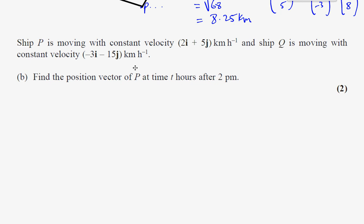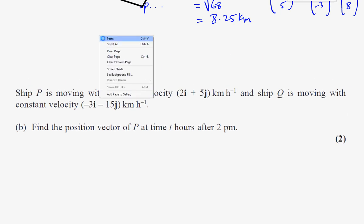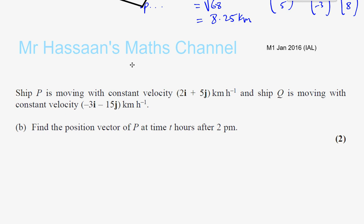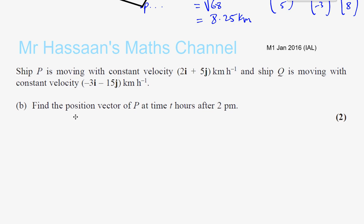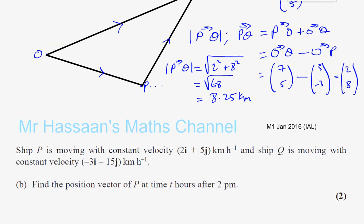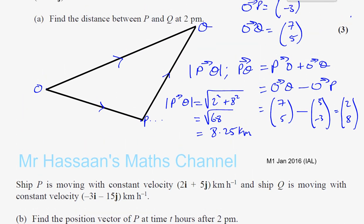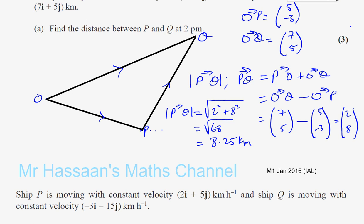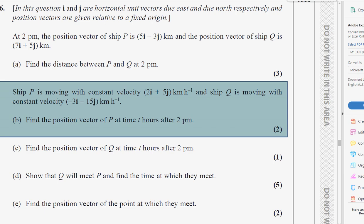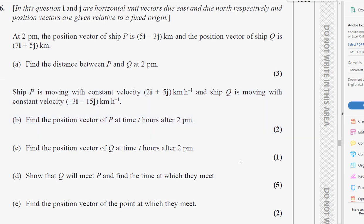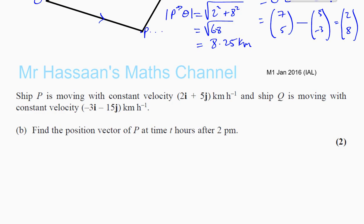Now, part B tells us that ship P is moving with constant velocity 2i plus 5j km per hour and ship Q is moving with constant velocity minus 3i minus 15j km per hour. Find the position vector of P at time t after 2 p.m. So you've got to find a general equation for P and for Q. Part C is for Q. I'll do that later.